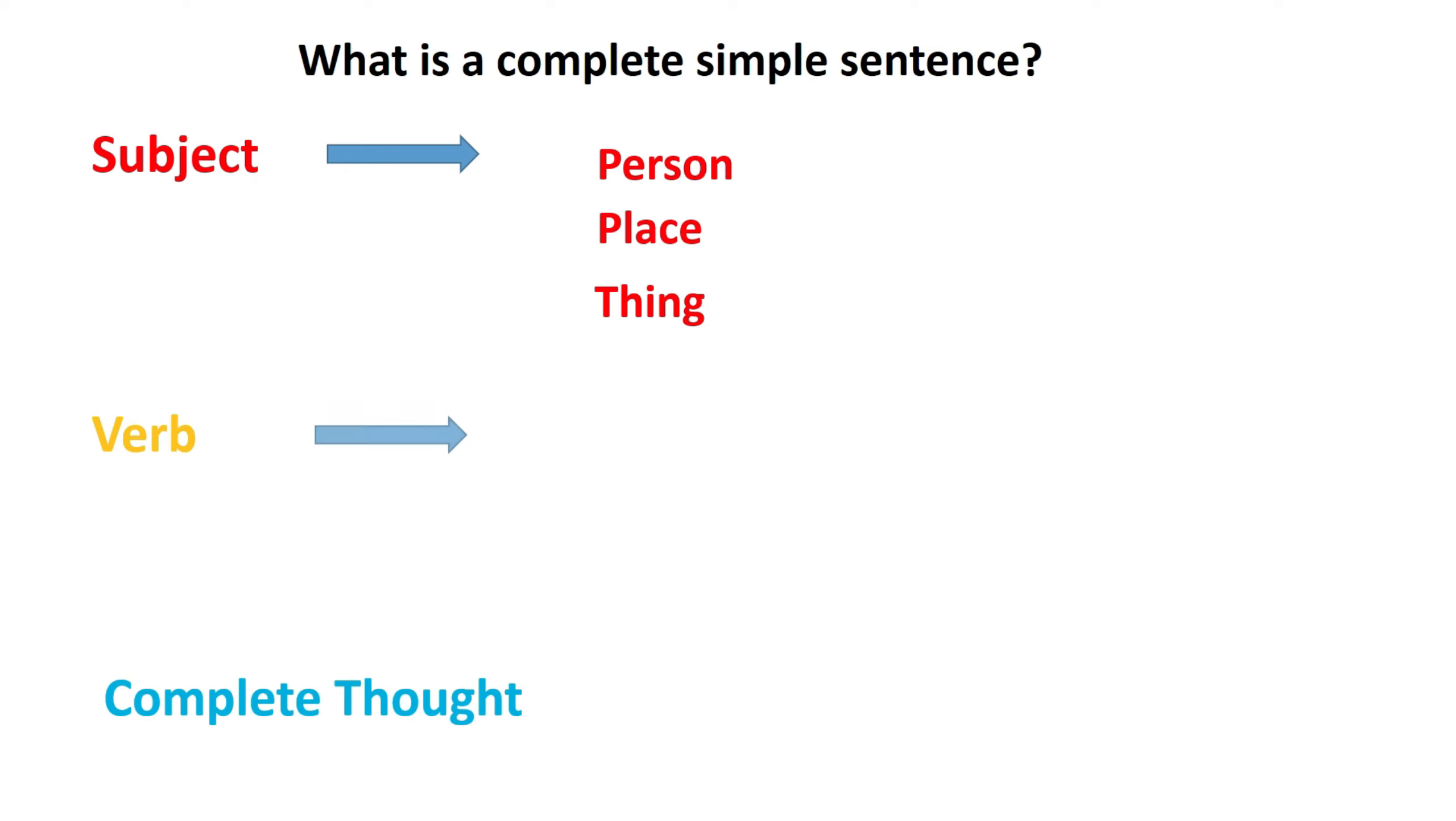A verb is also important in a complete simple sentence. Amar bought a car. Bought is a verb. We need this, and also we need a car, which is the complete thought.